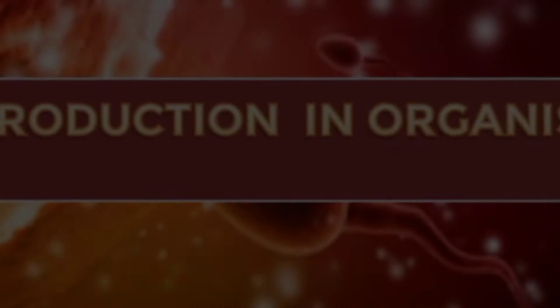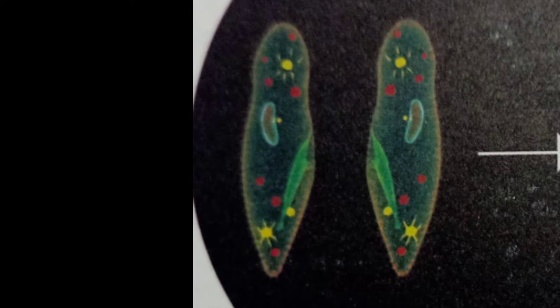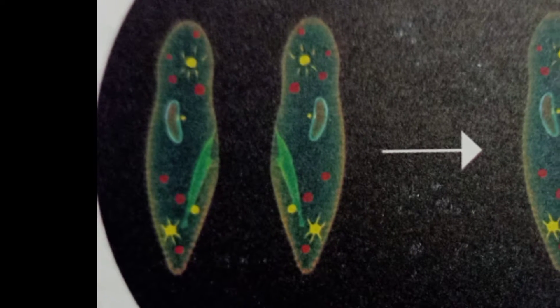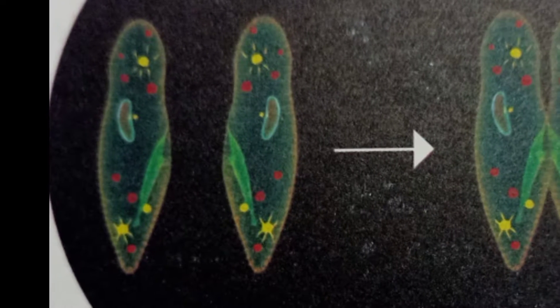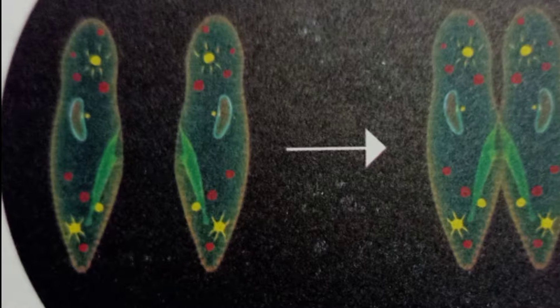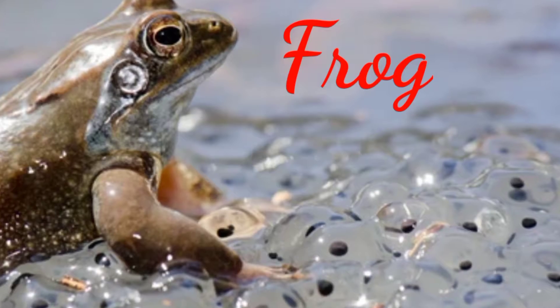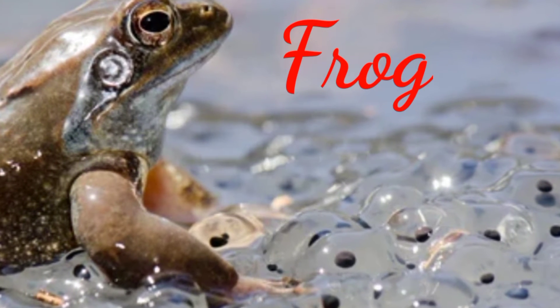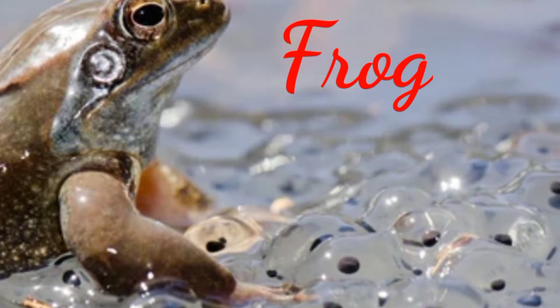Reproduction is the fundamental feature of all living organisms. It is a biological process by which organisms produce their offspring. Reproduction is of two types: asexual reproduction and sexual reproduction.